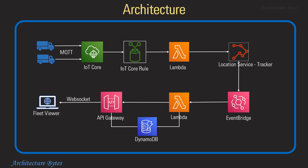Here's the architecture for the application. Location updates from the trucks are sent over MQTT to AWS IoT Core message broker to a specific topic. An IoT Core rule picks up the messages from the topic and invokes a Lambda function, which in turn sends the location updates to Amazon Location Service tracker. The tracker saves the device location and generates a location update event. EventBridge captures the event and sends it to a Lambda function, which is responsible for sending the message to the fleet viewer application clients via the API Gateway over WebSockets.